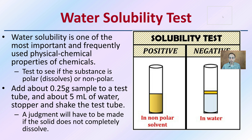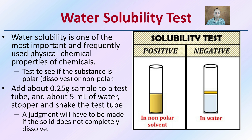A water solubility test is one of the most important and frequently used physical-chemical properties of chemicals. This test shows whether the substance is polar — meaning it will dissolve — or non-polar. For example, oil won't dissolve in water because it's non-polar, while salt is an ionic compound and is polar, so it dissolves well. Add about a quarter gram of sample to a test tube with five mL of water, stopper and shake, then determine whether the solid completely dissolves.